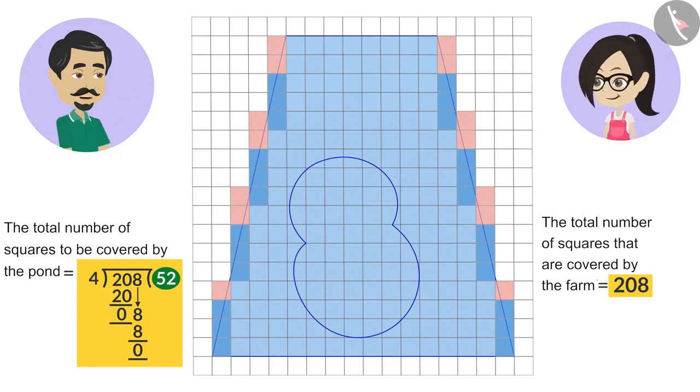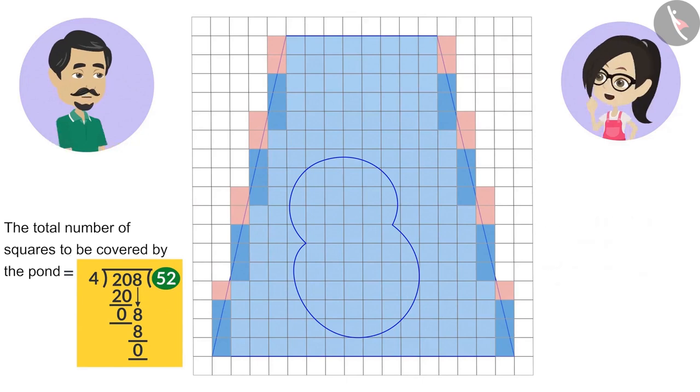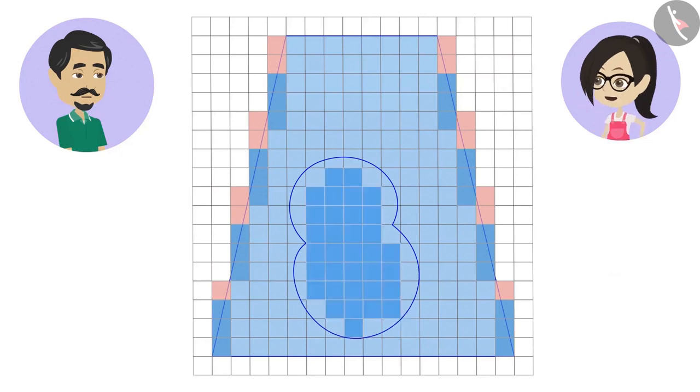Yes, you are absolutely right. Now, we will count the squares covered by this pond. The number of squares that are covered completely is 34.